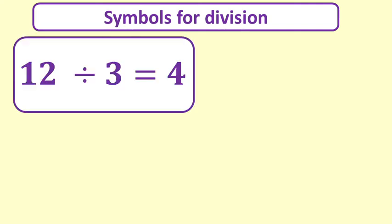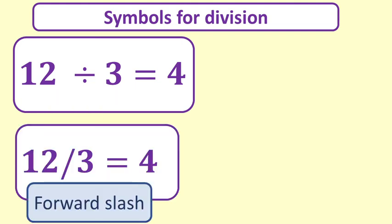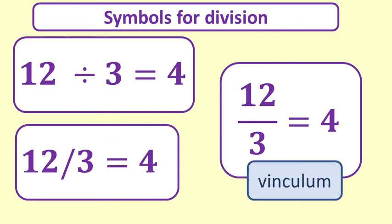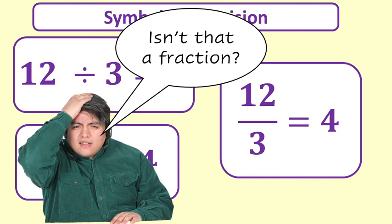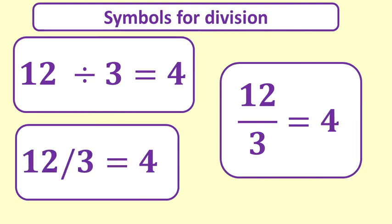And how about division? Division is a bit trickier as there are several different ways we write division. When we first learn about division we use the division symbol, the obelisk. Or that can be replaced with a forward slash. Or with a horizontal line called a vinculum. But wait a minute I hear you say. That's a fraction. And yes it is. 12 divided by 3 is equivalent to 12 thirds which is 4. These expressions are all equivalent.